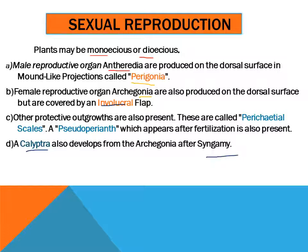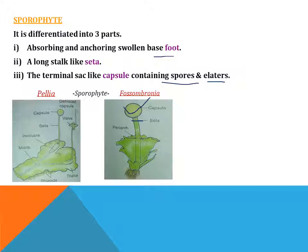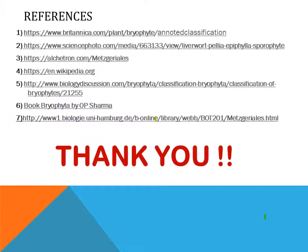Other protective structures are also present, such as perichaetal scales, pseudoperianth, and a calyptra that also develops from the archegonia after syngamy. The sporophyte is differentiated into three parts: the first is the absorbing and anchoring foot; the second is a long stalk-like seta; and the third is a terminal capsule containing spores and elators.